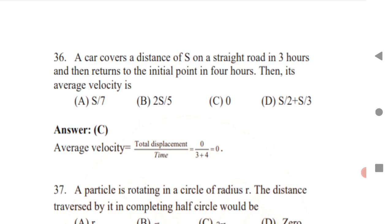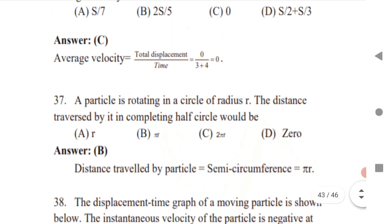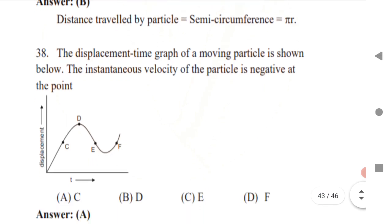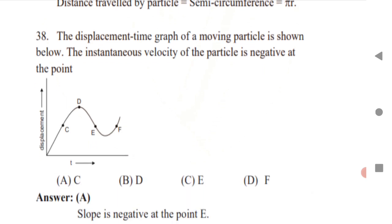Next: a car covers distance s in 3 hours and returns to its initial point in 4 hours. What is the average velocity? Whenever someone goes to a point and comes back to the same point, displacement is zero, so average velocity is automatically zero. Next: a particle rotating in a circle of radius r — the distance traversed in completing half a circle (semicircle) is πr.